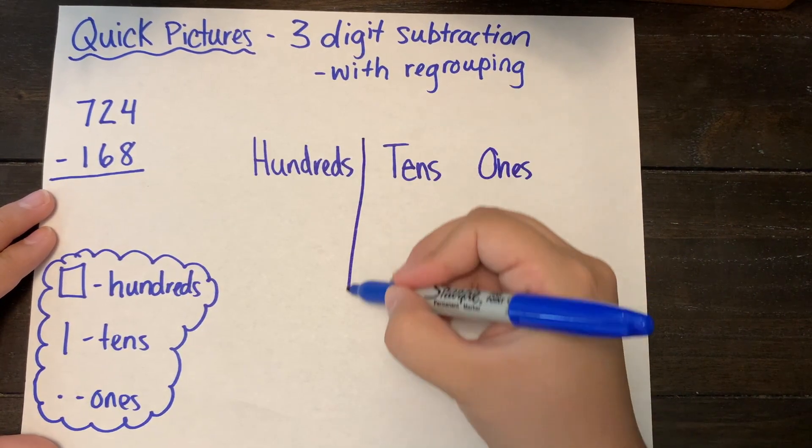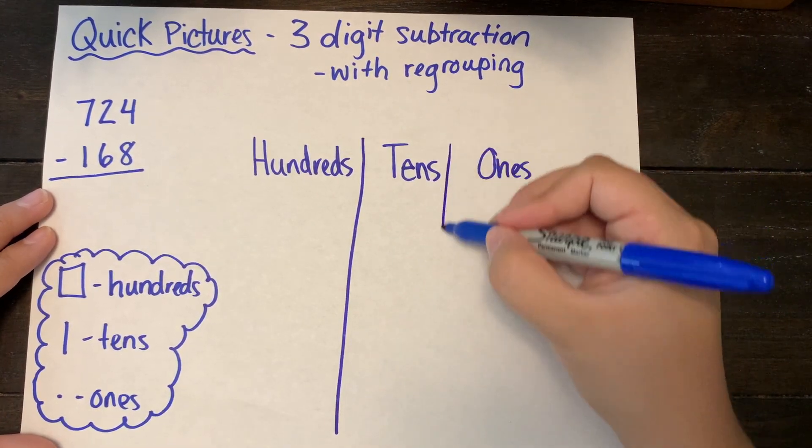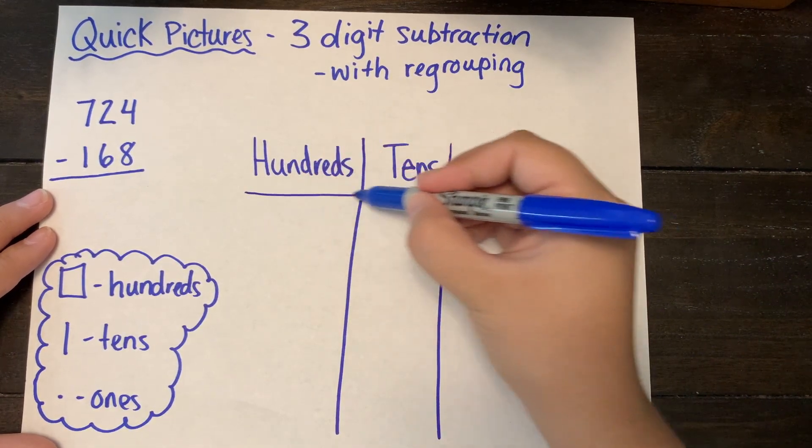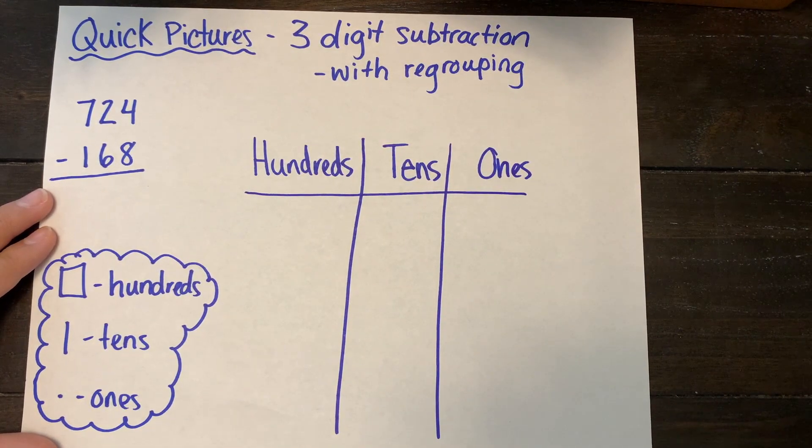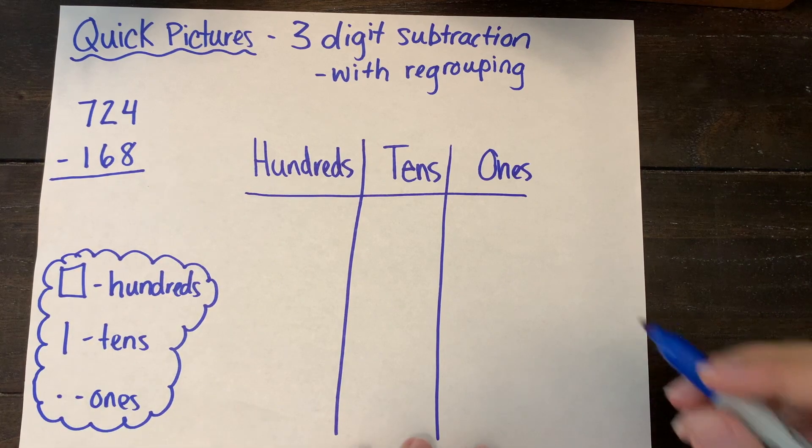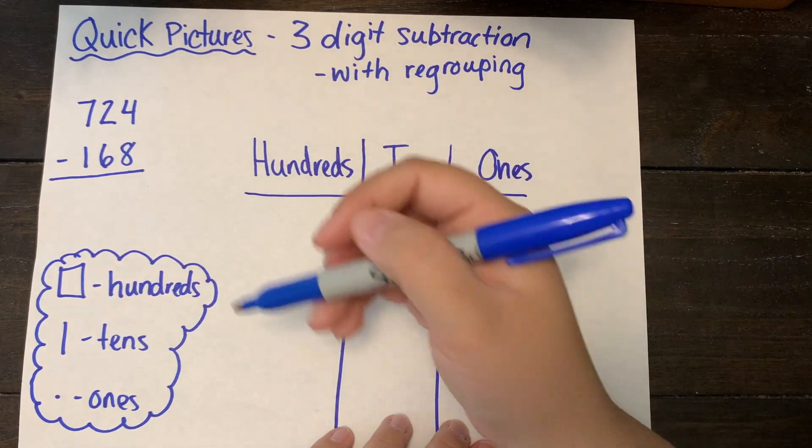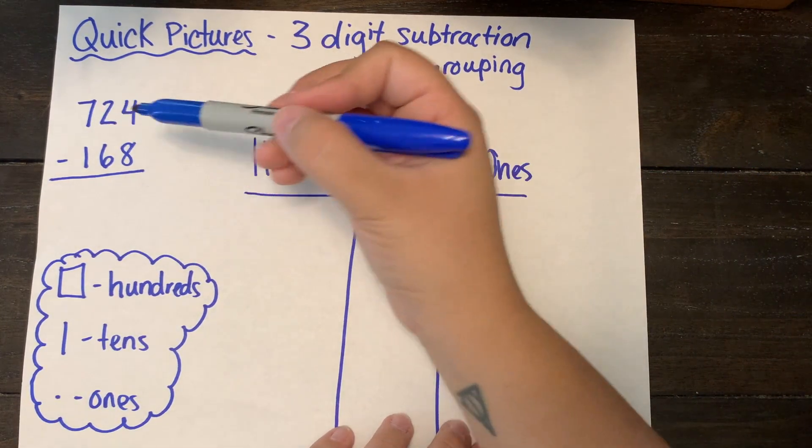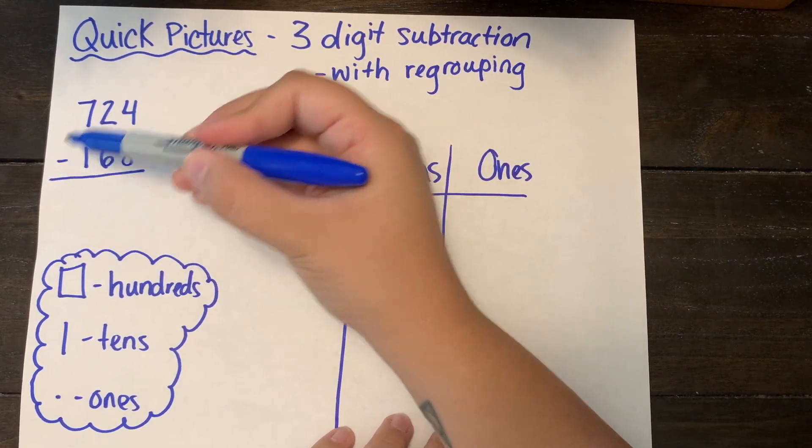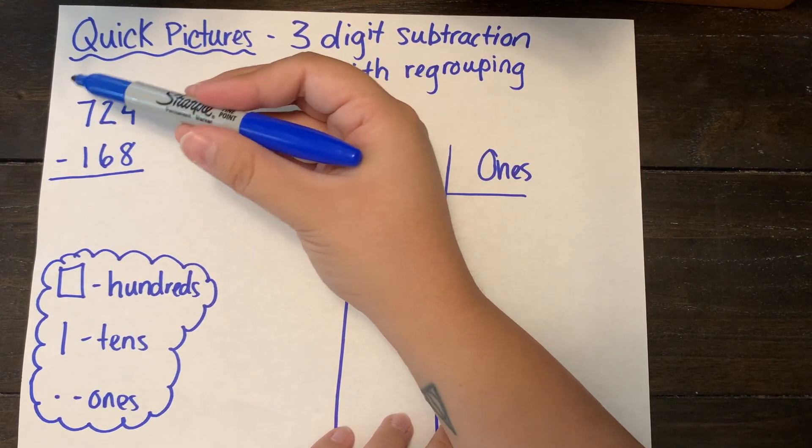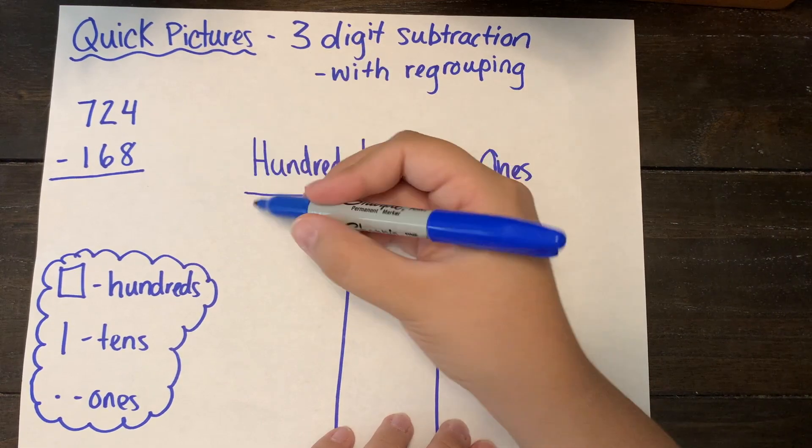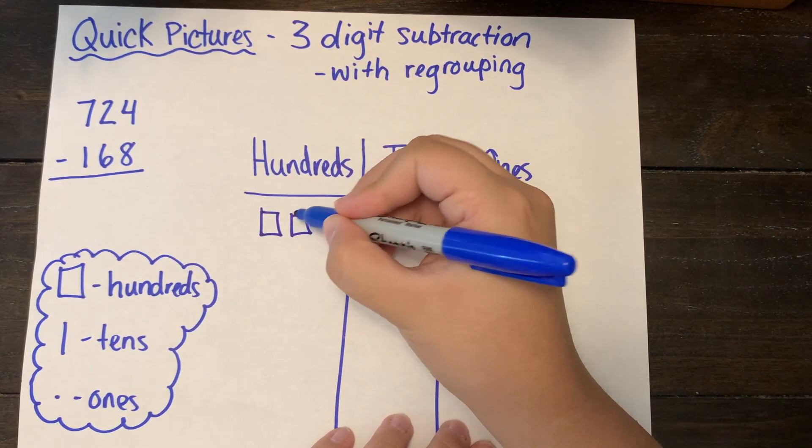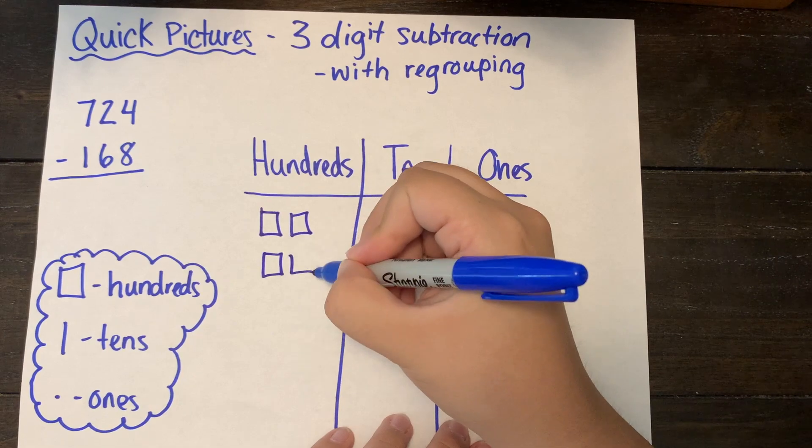Because this is subtraction I'm only drawing the minuend, which is the first number in a subtraction problem. So 724 is my minuend. I'm going to draw 724 and then I'm going to use those pictures and take away 168.